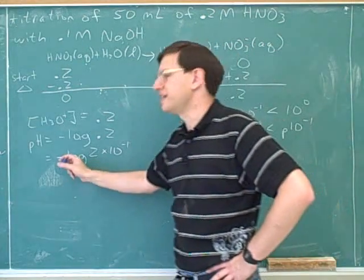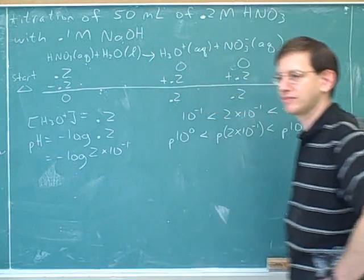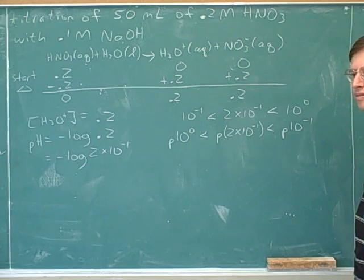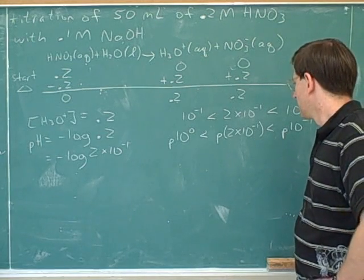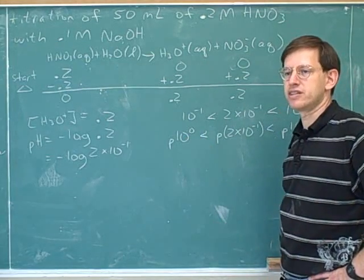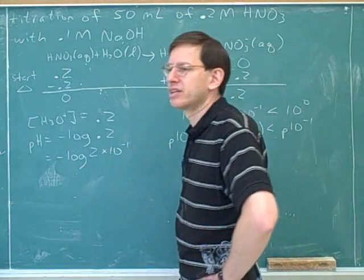Because the p involves taking the negative log. So when a number is big, its p is small. So when we take the p's, the numbers all change. Now what's the p of 10 to the 0? 1. Now what does it mean to take the log of something? 2.